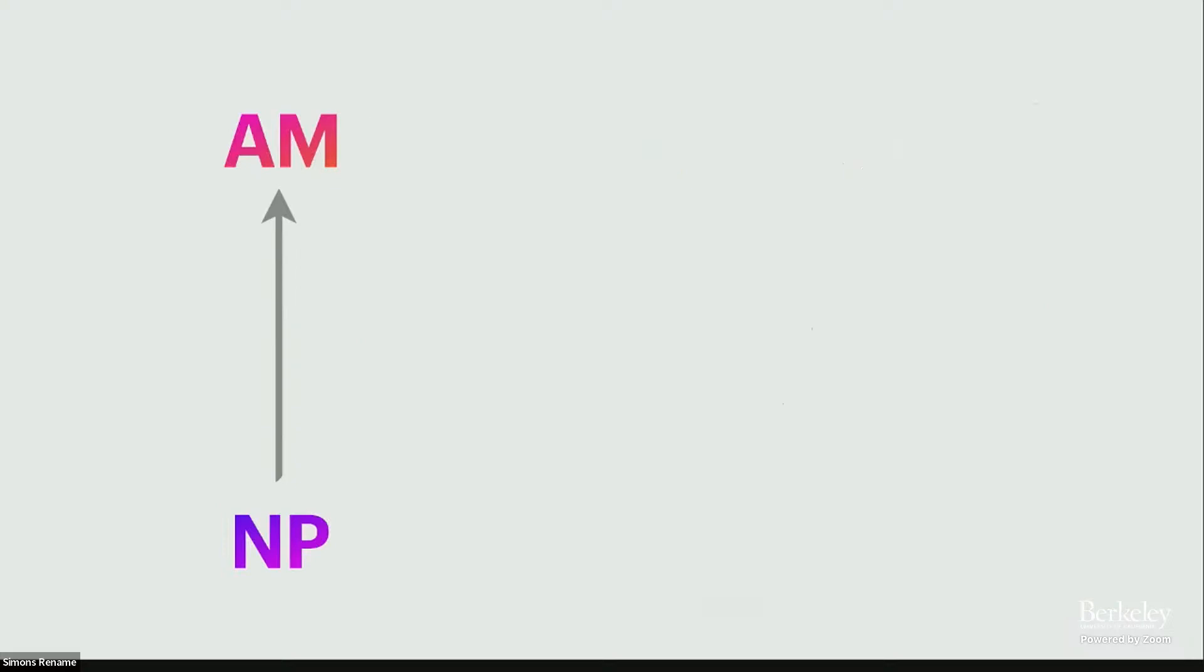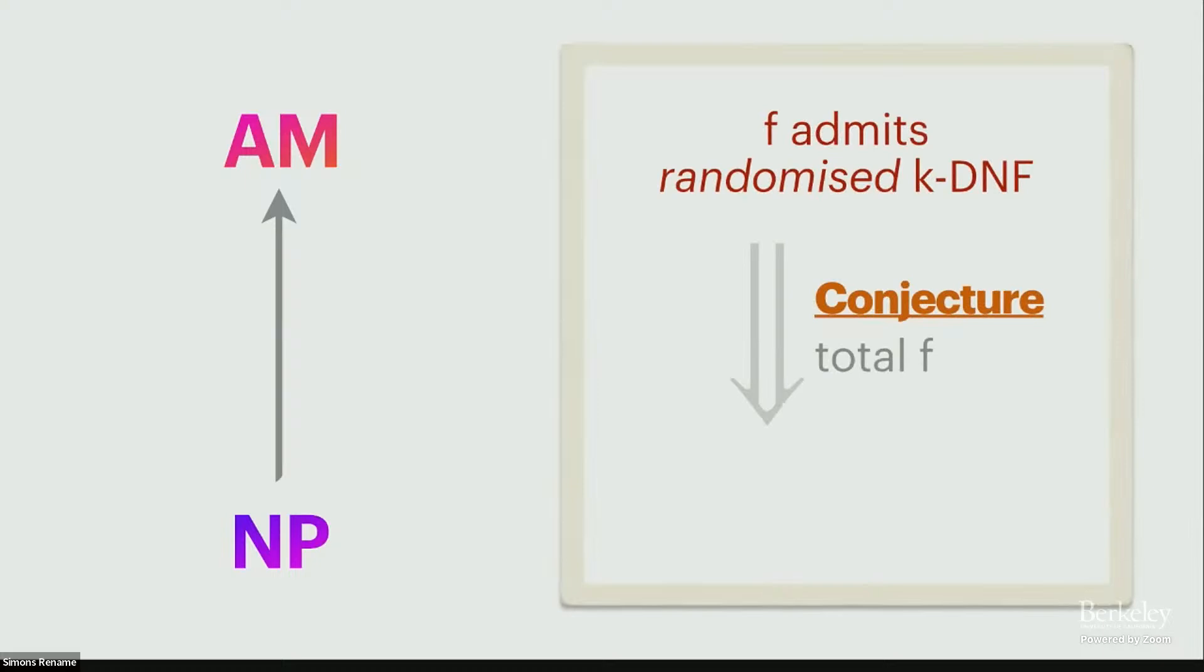So this is a fun game. We can do a little bit more. So here I've picked as my semantic class Arthur-Merlin and the syntactic NP. So what are the query complexity analogs? I suppose here it's just a randomized DNF, so probability distribution of a DNF. On some input to sample a DNF and the DNF should give you the right answer with high probability. So my conjecture is that if you have such an object and you're computing a total Boolean function, well, you should just collapse again down to just in this case a DNF. It's wide open.